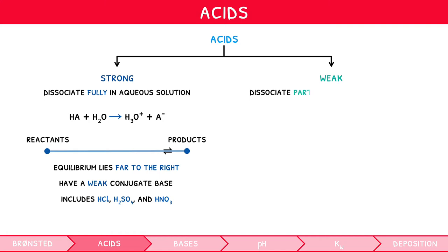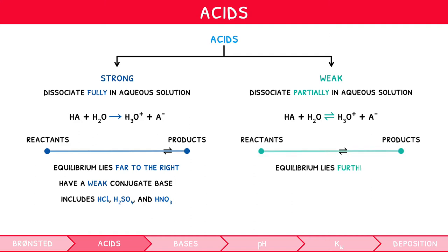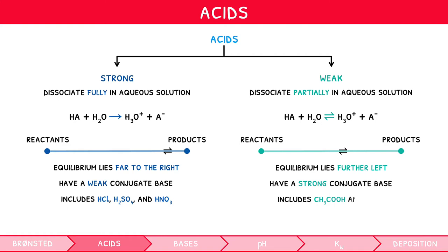Weak acids dissociate partially in aqueous solution, so are expressed using a reversible arrow. Here, the position of equilibrium does not lie far to the right, but is found further left, the extent of which varies based on the acid. Weak acids are therefore considered to have a strong conjugate base, as it will readily pick up protons to reform the acid. Common weak acids include CH3COOH and H2CO3.